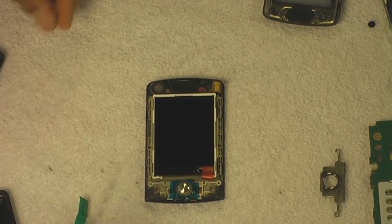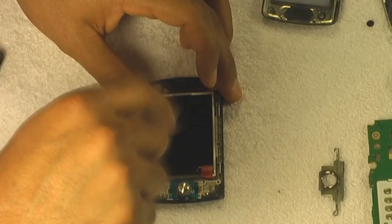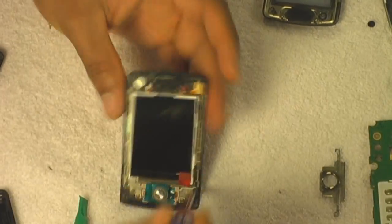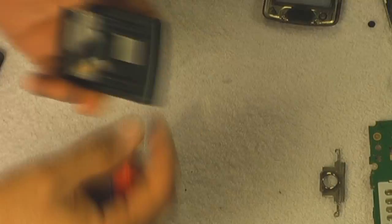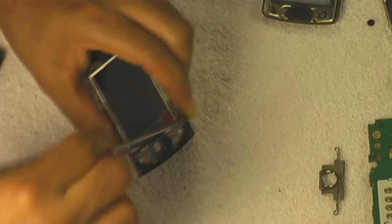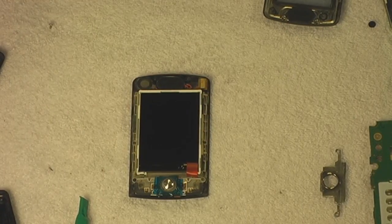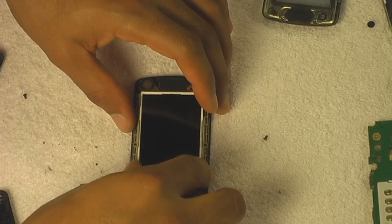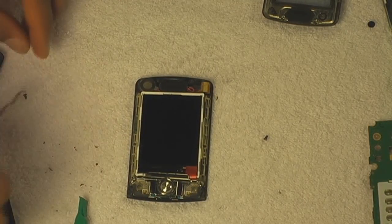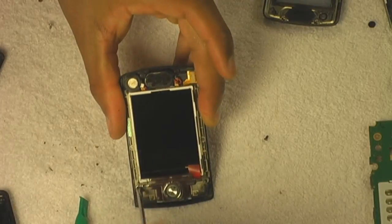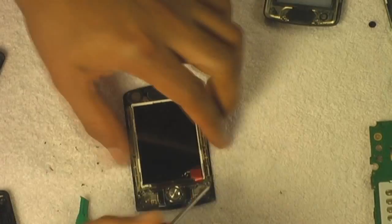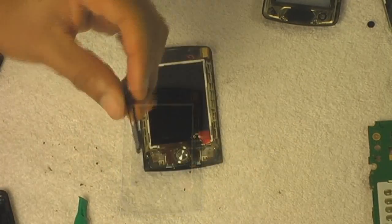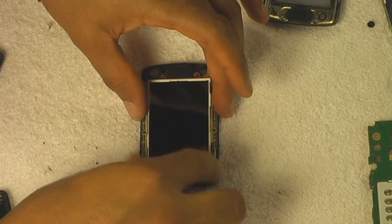Now we're going to put these two screws back. There you go. Tighten that down. Now tighten it down right. Get that metal guard, put it back in place. Two screws for that one too. One and two.